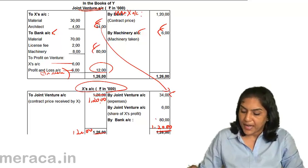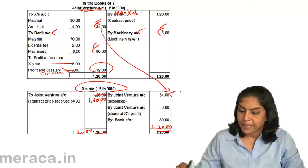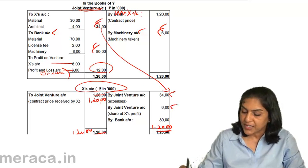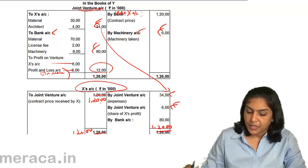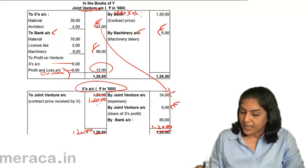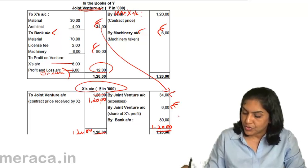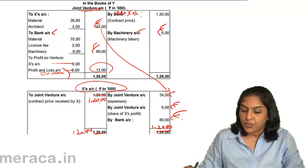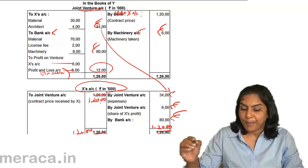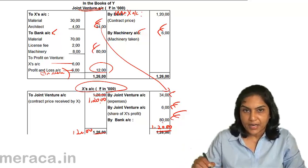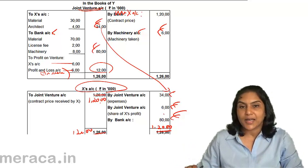In X's Account in Y's books: by Joint Venture 34 lakhs, by Joint Venture 6 lakhs share of profit — total debits 40 lakhs. To Joint Venture was 1 crore 20 lakhs. Therefore the balance is 80 lakhs — the money received by Y. Bank Account debit to X's Account, 80 lakhs.